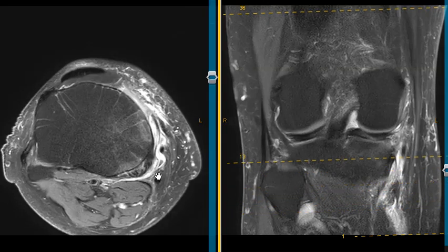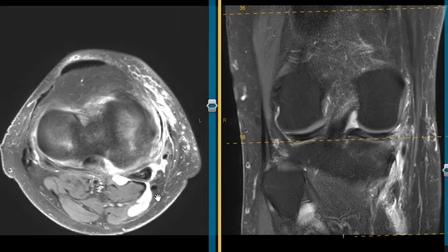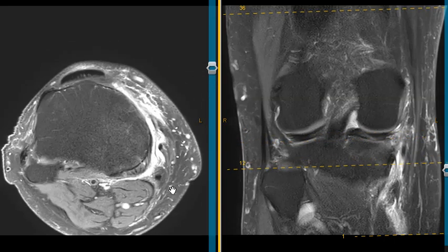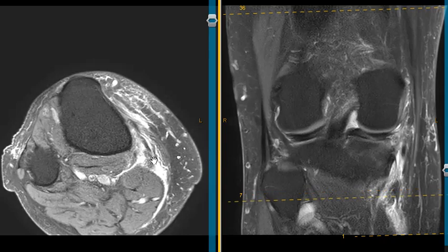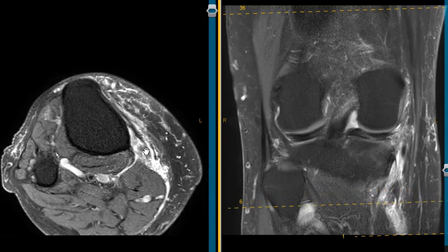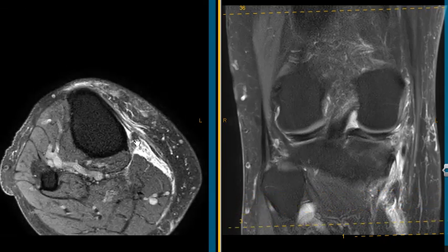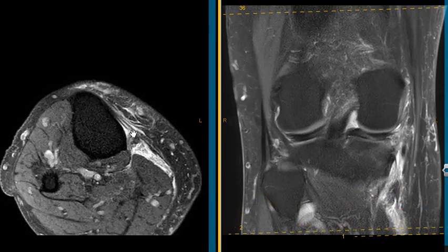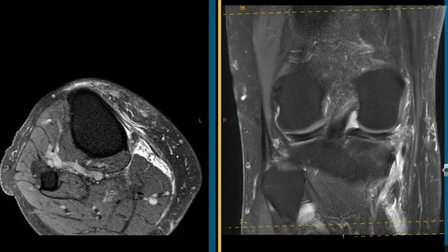But the semi-tendinosis, which is right here, nice and dark here, we're going to watch it become foggy, gray. And on this view here, it's completely torn and balled up right there and surrounded by this complex edema or hemorrhage.